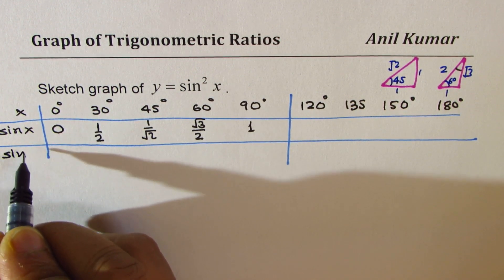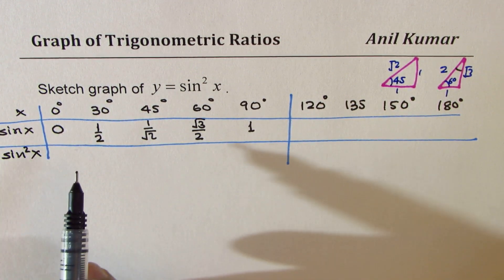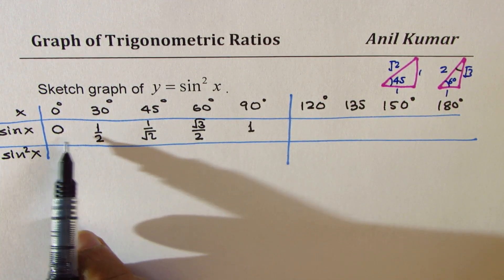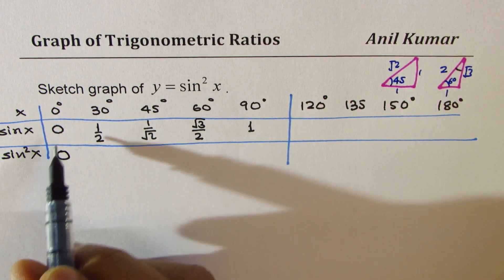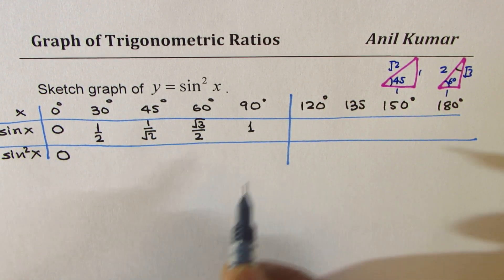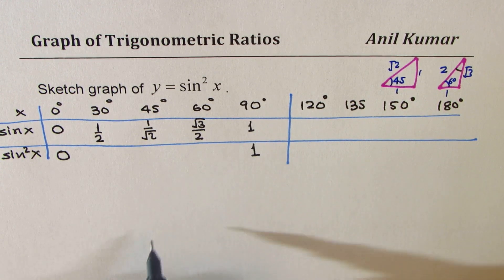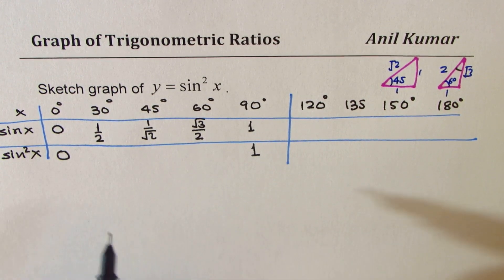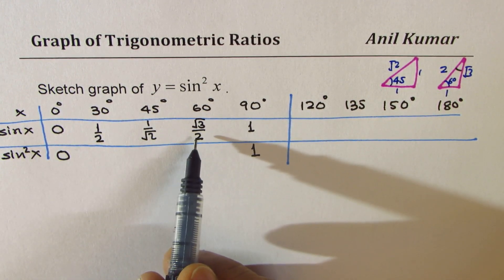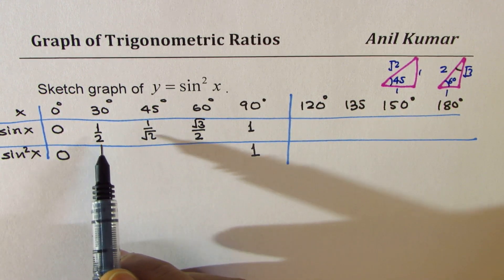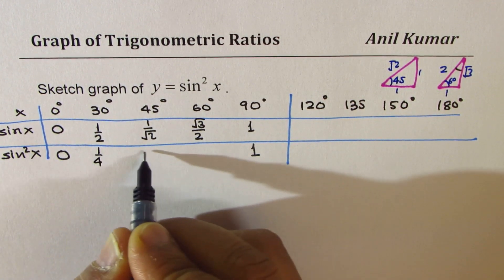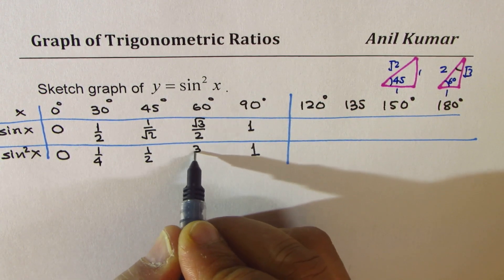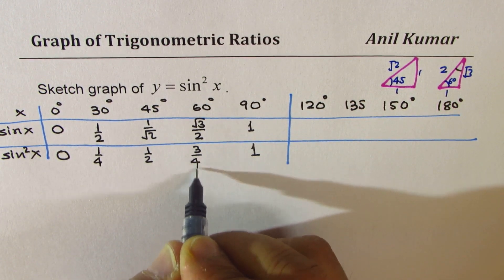When I say sine square x, it really means you have to just square these values. What you notice is the square of 0 is going to be 0, and the square of 1 is going to be 1. All these intermediate values are less than 1, and therefore their squares are going to be lesser. So it would be like 1 over 4, 1 over 2, 3 over 4.